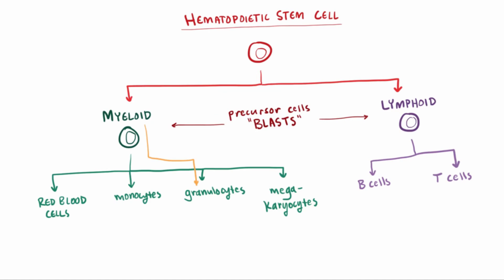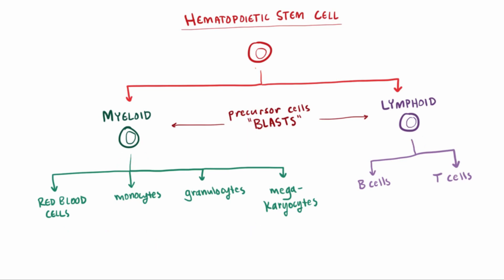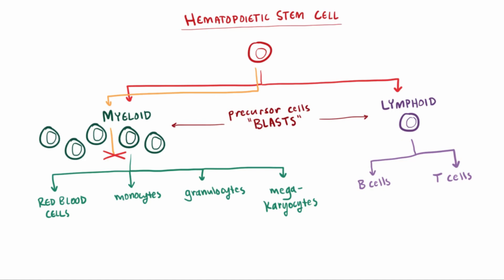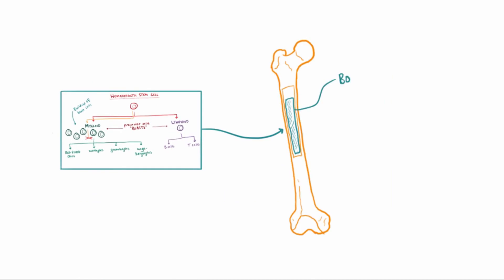These adventures of the hematopoietic stem cells are usually happening all the time, and new cells are always being created. In acute leukemia, though, they lose this ability to differentiate or mature. For example, they might get to the myeloid blast part of the adventure but can't differentiate any further. And when they can't go anywhere, they start to build up — so you end up with a buildup of these blasts or stem cells in the bone marrow.